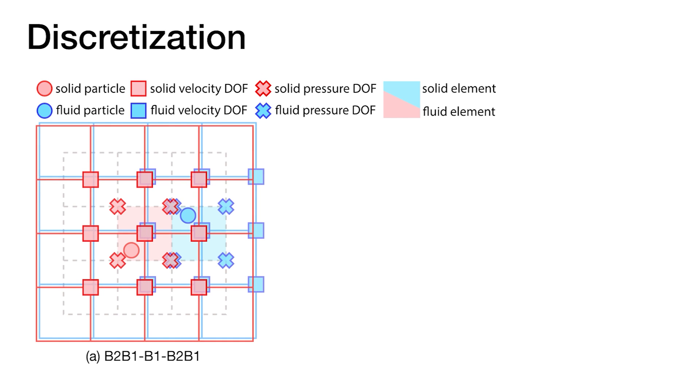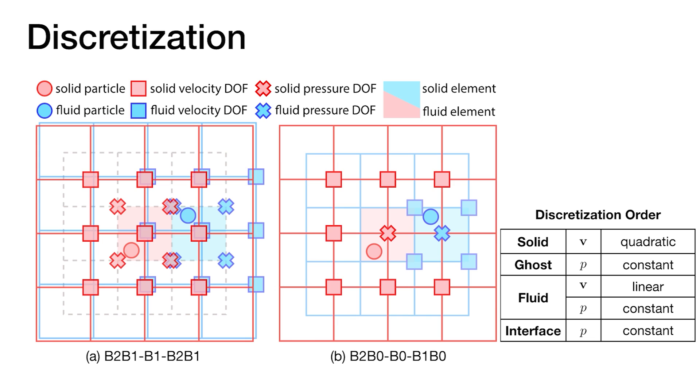Specifically, we have multiple choices for discretization degrees. The quadratic velocity linear pressure scheme is natural but results in a very dense pressure stencil. Our method uses quadratic velocity for solids, linear velocity for fluids, and a constant kernel for the pressure which achieves a good balance between accuracy and efficiency.